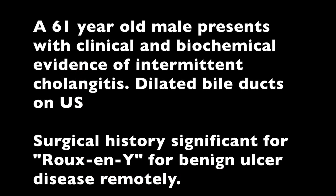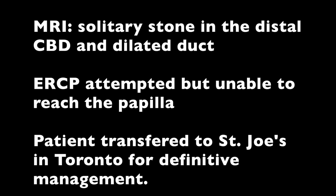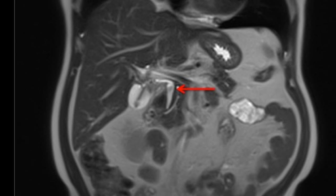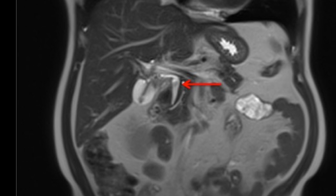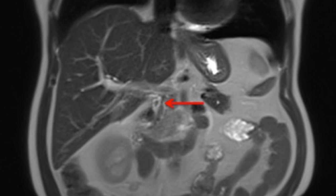A patient was referred with clinical and biochemical evidence of intermittent cholangitis. He had previous Roux-en-Y surgery. Imaging demonstrated a solitary stone in the distal bile duct, and ERCP was unsuccessful. He was transferred for definitive care. The T2 images demonstrate a small stone in the distal common bile duct, better demonstrated on this image.